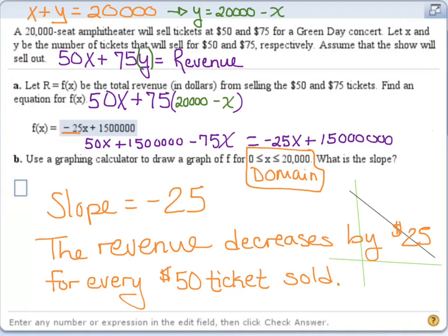And if we wanted to talk about the range of this situation, the maximum amount we could have here is $1,500,000. And that happens when we sell all of our tickets for $75. And if we sell all of our tickets for $50, we would go with the 50 times the $20,000 to get the minimum value for Y.